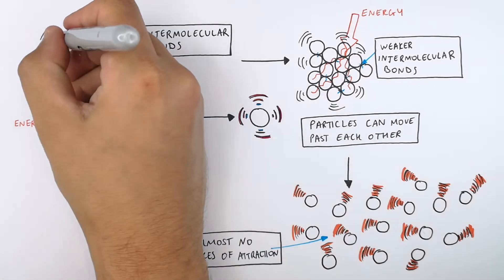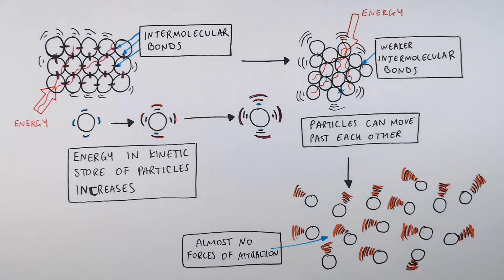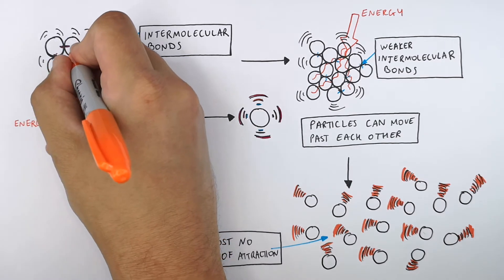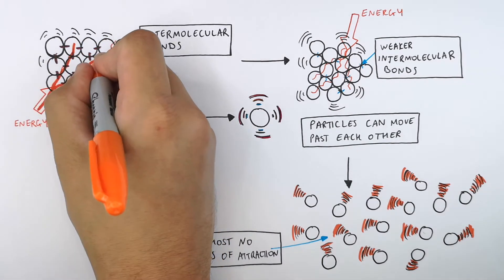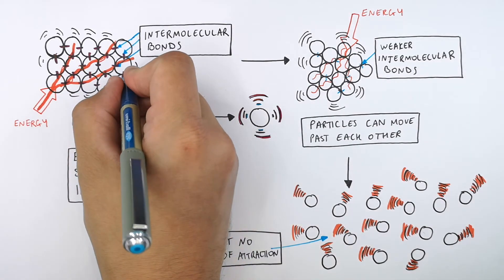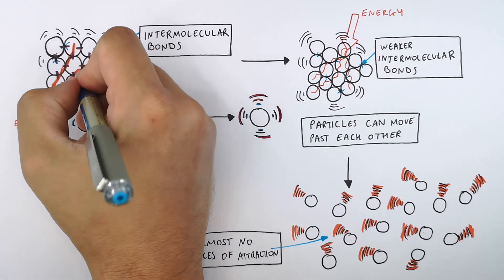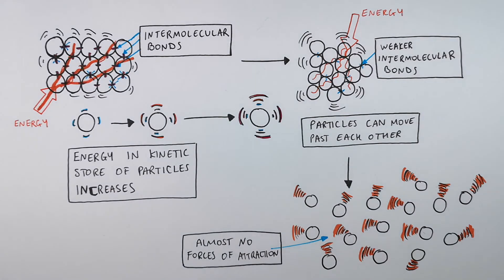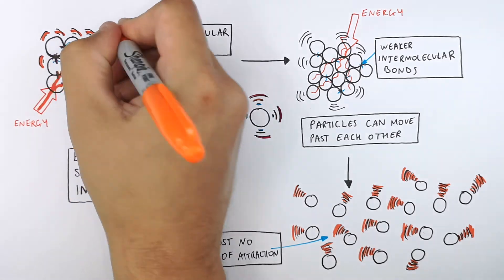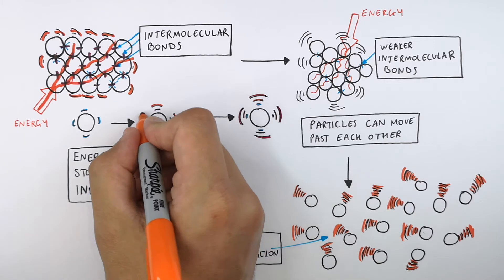So let's recap. In a solid there are stronger intermolecular bonds between the particles. If you then increase the internal energy of this system — increasing the kinetic energy store of the particles — you're going to cause the particles to move faster. If the particles are now moving faster, they have a higher kinetic energy, and they're going to overcome the intermolecular forces of attraction and then break some of the bonds.